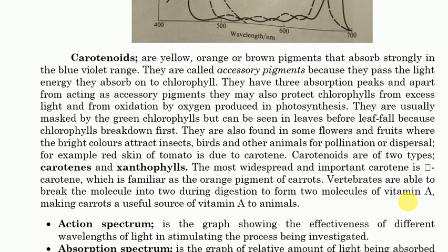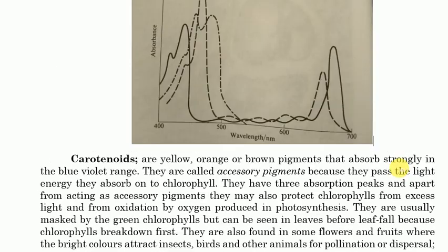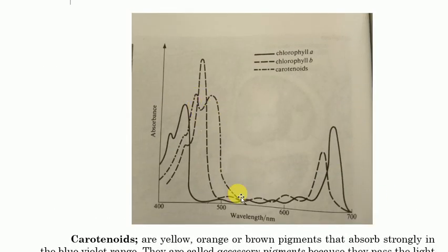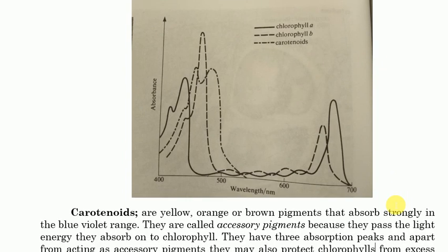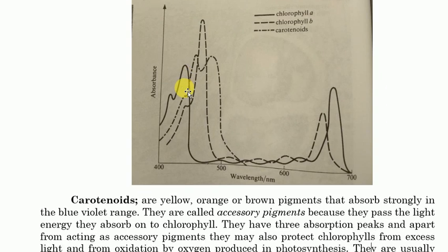Carotenoids are yellow, orange, or brown pigments that absorb strongly in the blue-violet range — as you can see in the graph, carotenoids have strong absorption on the blue-violet side. Chlorophyll b also has strong absorption in the blue-violet light compared to red light. Chlorophyll b will absorb more blue-violet light compared to chlorophyll a. So if a plant has both chlorophyll b, chlorophyll a, and carotenoids, it can absorb a large range of light wavelengths.